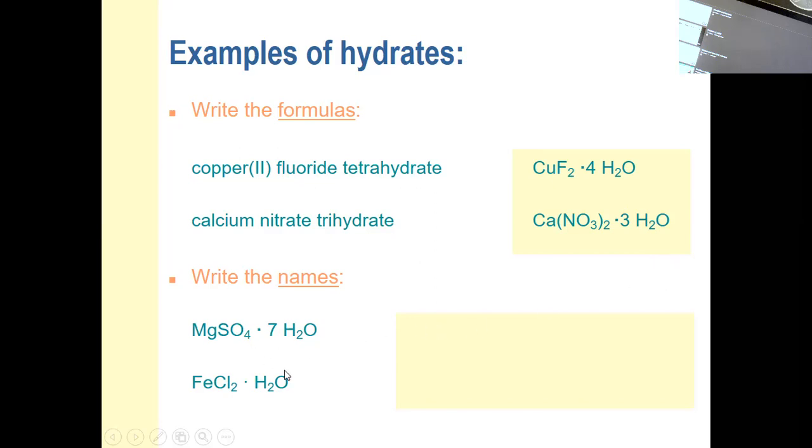Give the names of the next two. MgSO4. Well, that's just magnesium sulfate. Magnesium is not a type two cation, so it doesn't need any Roman numeral in its name. SO4 is a complex ion that's sulfate. And then seven water molecules. The prefix for seven was hepta. So magnesium sulfate heptahydrate.